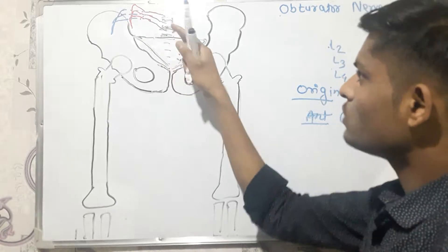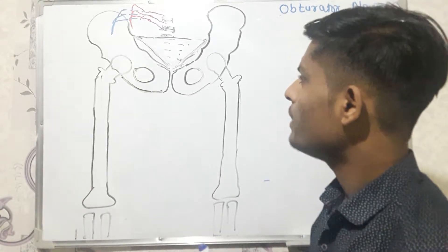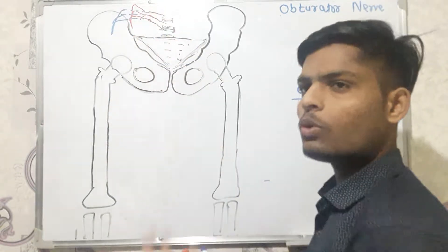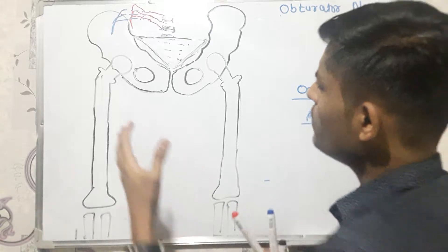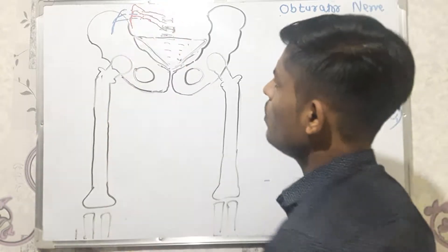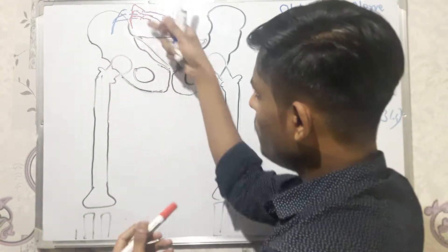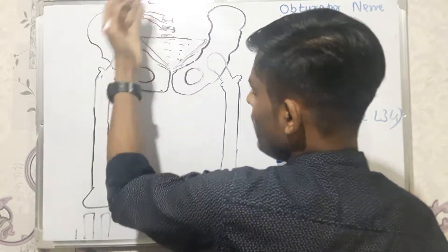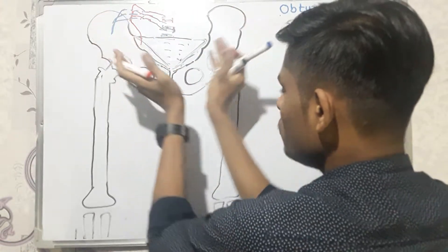Regarding its course: the obturator nerve runs in the substance of the psoas major muscle, then descends into the pelvic cavity. The pelvic cavity is bounded posteriorly by the sacrum and anteriorly by the two hip bones joining at the pubic symphysis. The obturator nerve enters the pelvic cavity and then lies in relation to the inner surface of the hip bone, descending down within the pelvic cavity.